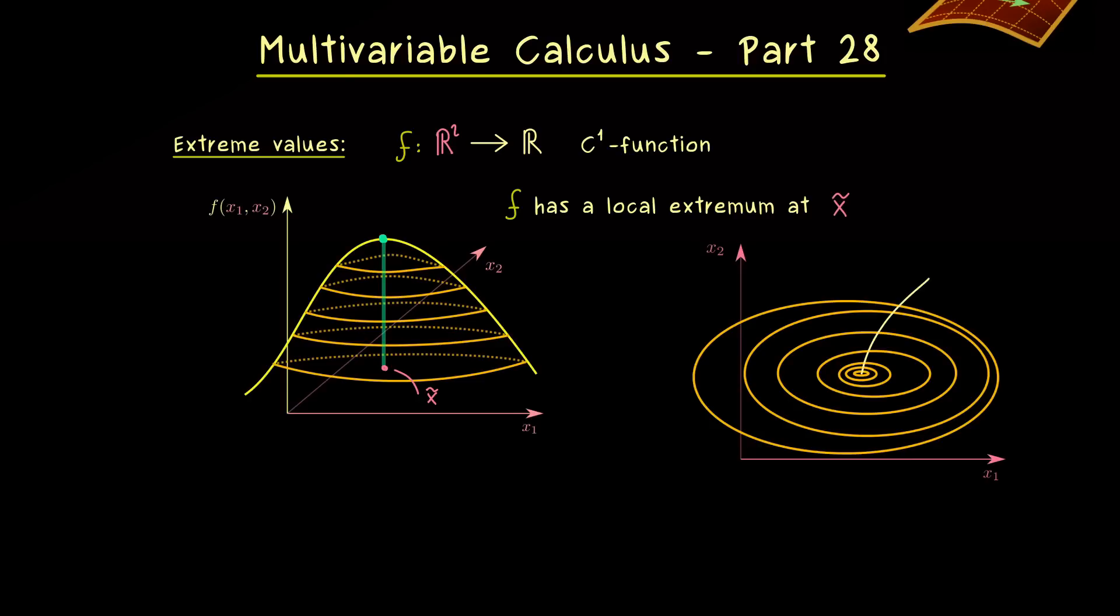And then we also see that our x̃ is there. Now the big advantage of the contour lines here is that at each point in the plane, we can visualize the gradient of f at this point. Indeed, we know that the gradient of f is always perpendicular to the contour line. This means, if we go in the direction of the gradient, we will increase the value of f.